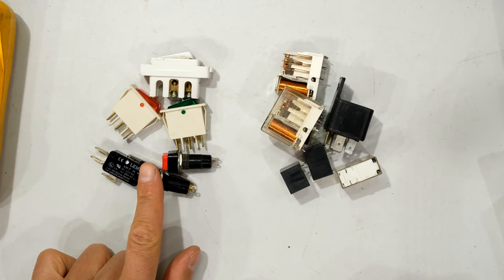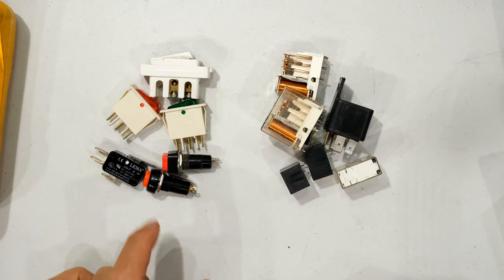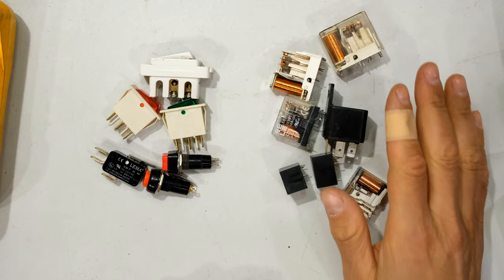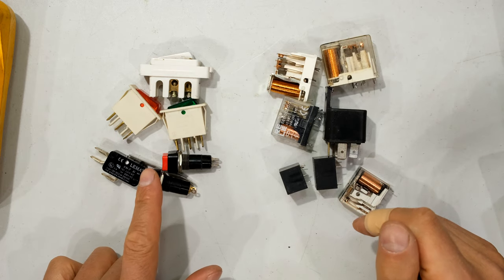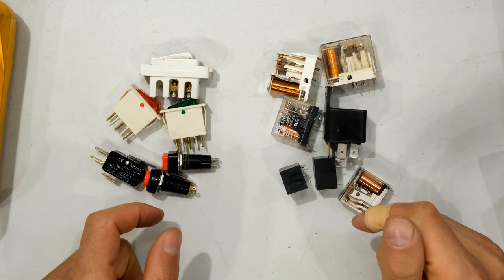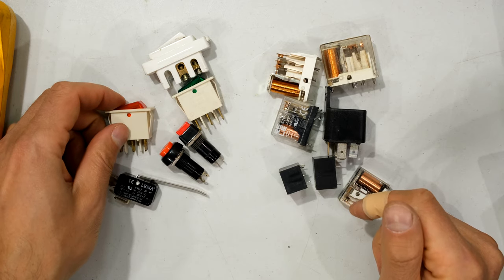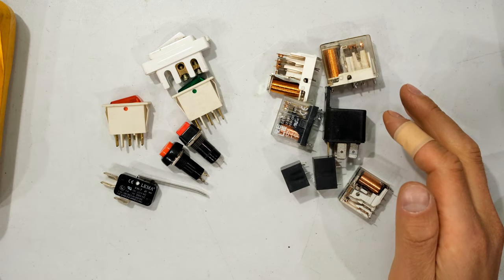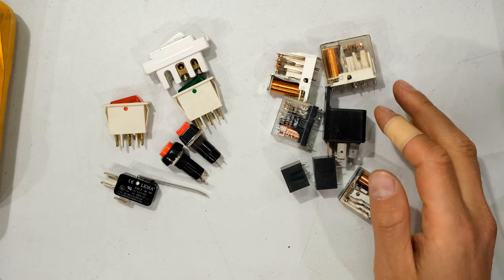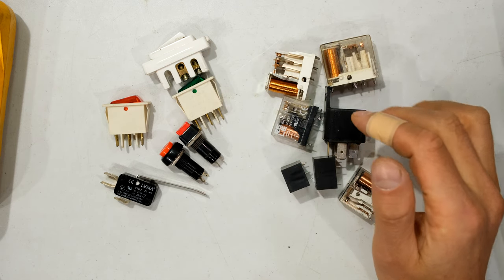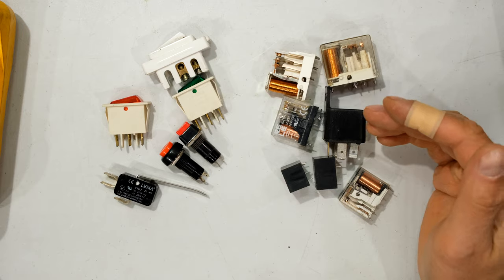So on the left here, these are all types of switches. On the right, these are all relays. So the main difference is that the switch requires the user to initiate the opening and closing. There we go, I open or I close. The relay, on the other hand, relies on an electrical current which flows through a coil which initiates the change. I'll now demonstrate that.